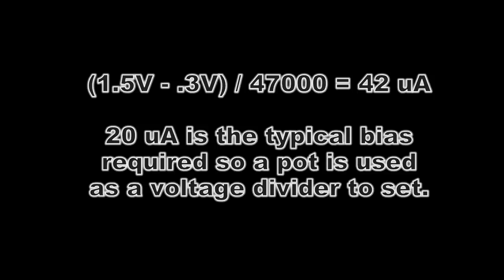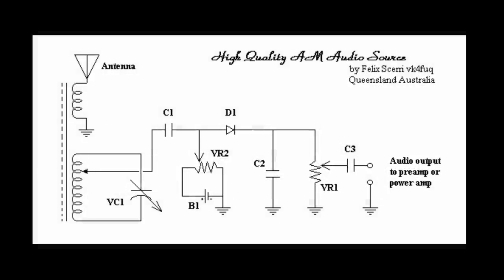With a 1.5 volt battery we can take care of something between a .3 to .7 volt forward drop on the diode. Divide that by 4700 and you get 42 microamps. We really only need about 20 microamps to bias a Schottky detector.